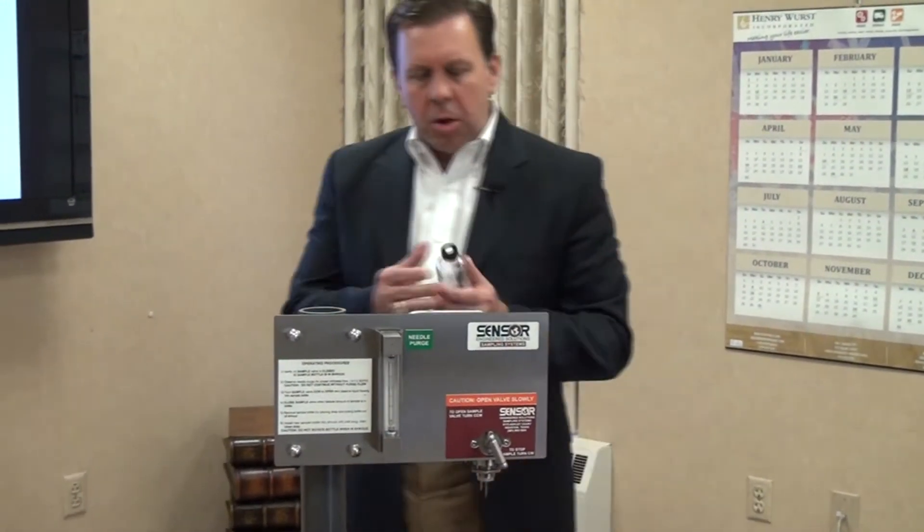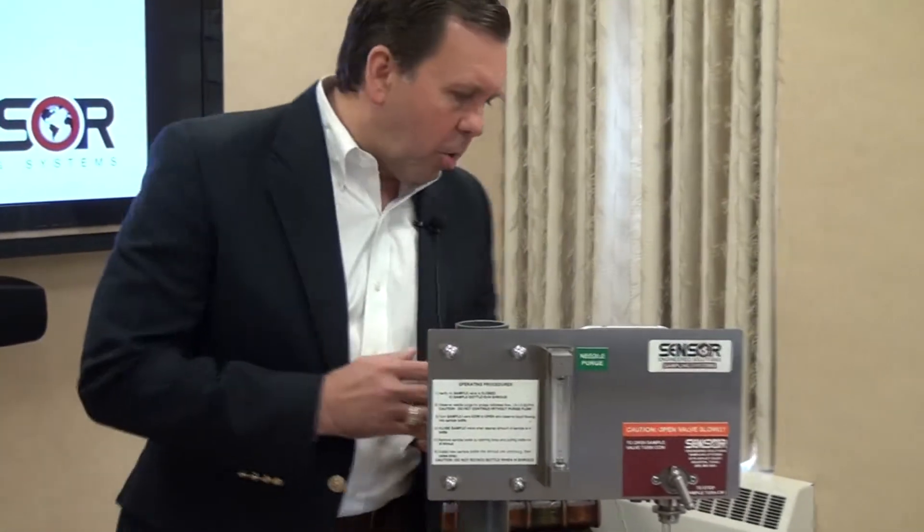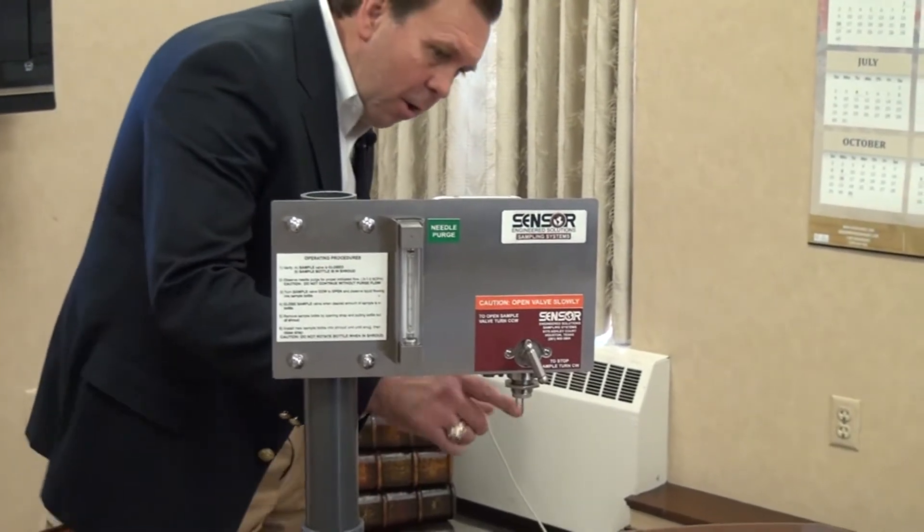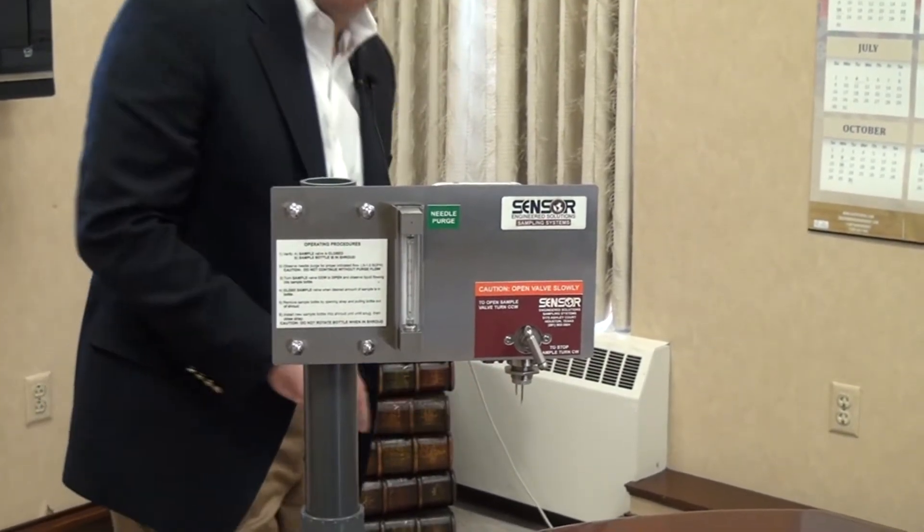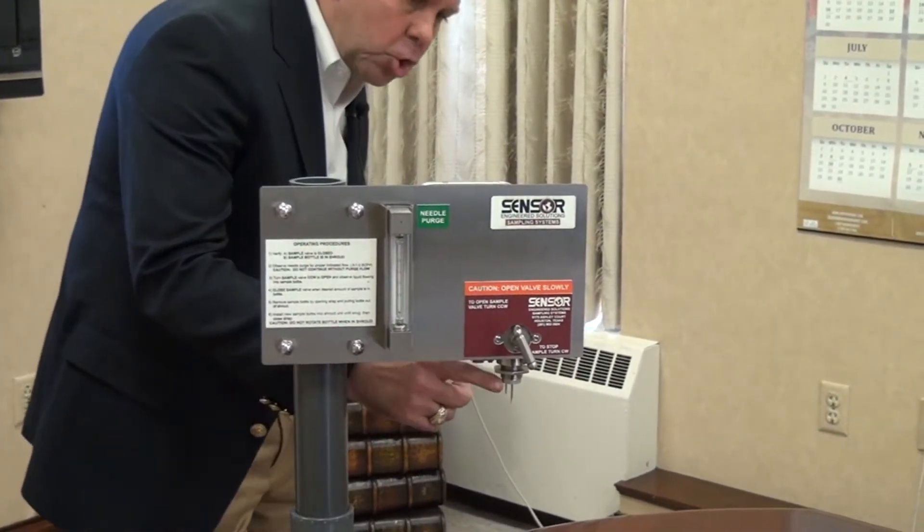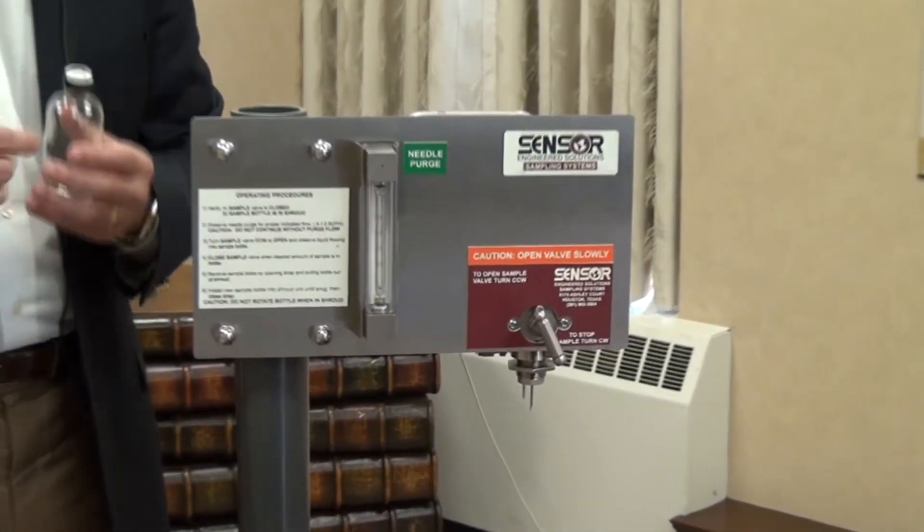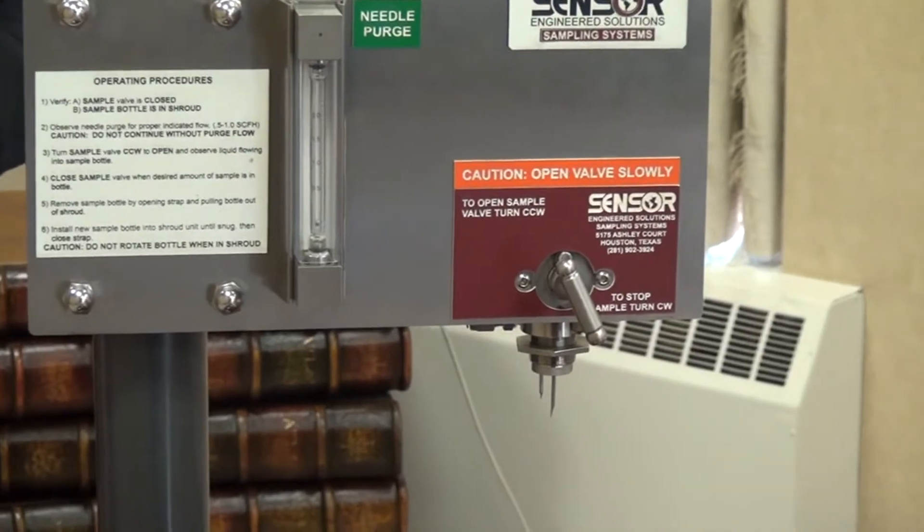The sample is injected into the bottle via one of the sample needles here on the injector assembly. The longer needle is the process needle. The shorter needle is the vent needle that allows the vapors to escape from the bottle as the sample is filling the bottle.